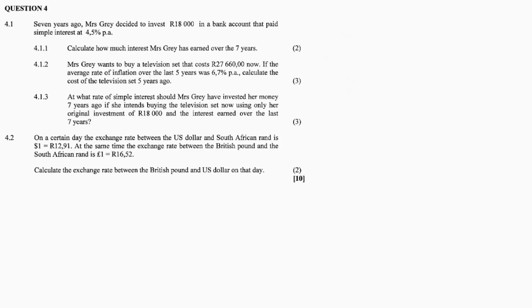Let's look at Question 4 on financial mathematics. 4.1: Seven years ago, Miss Gray decided to invest 18,000 rand in a bank account that paid simple interest at 4.5% per annum. So she's earning simple interest at 4.5%, initially depositing 18,000 rand. 4.1.1: Calculate how much interest Miss Gray has earned over the seven years.